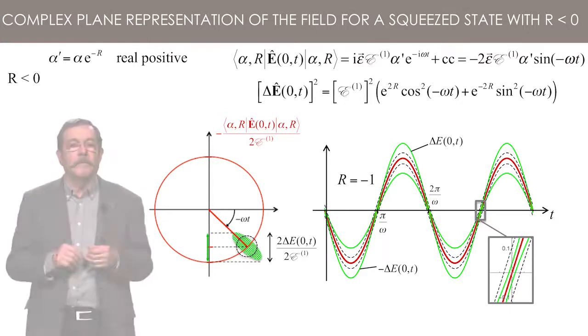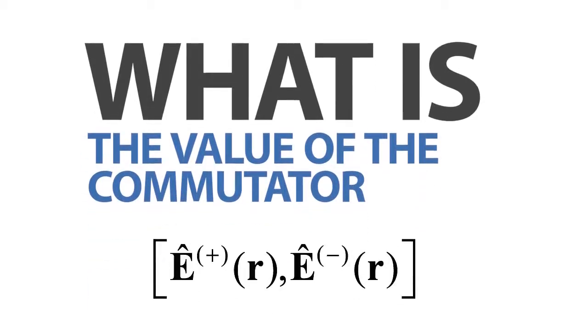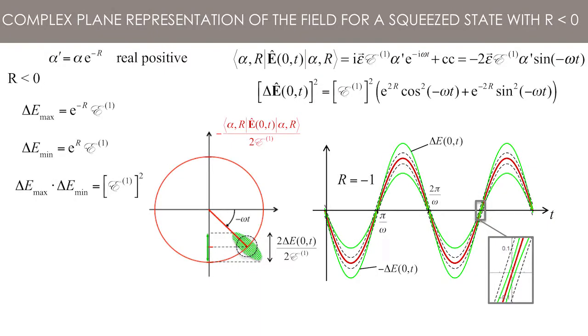The maximum and minimum values of the dispersion are E1 times exponential of minus r and exponential of r, respectively. Their product is equal to E1 to the square, that is to say the minimum value compatible with the Heisenberg dispersion relation associated with the fact that fields observable at two instants separated by one quarter of a period of oscillation have a non-null commutator. We will come back to this point in the next section.